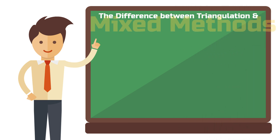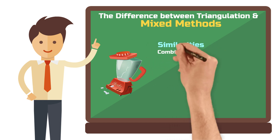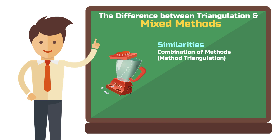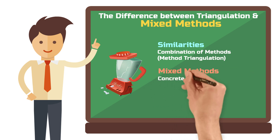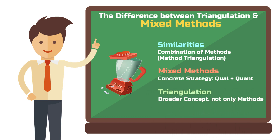If you're familiar with mixed methods, you might wonder what the big difference is, since different methods are combined there too. Mixed methods and triangulation are indeed two related concepts within empirical social research — they share similarities such as the combination of different methods. But mixed methods represent an independent research strategy that explicitly combines quantitative and qualitative methods to benefit from the strengths of both approaches. Triangulation, on the other hand, is a much broader concept, which not only involves the combination of methods but also includes theoretical perspectives and other subjective viewpoints.